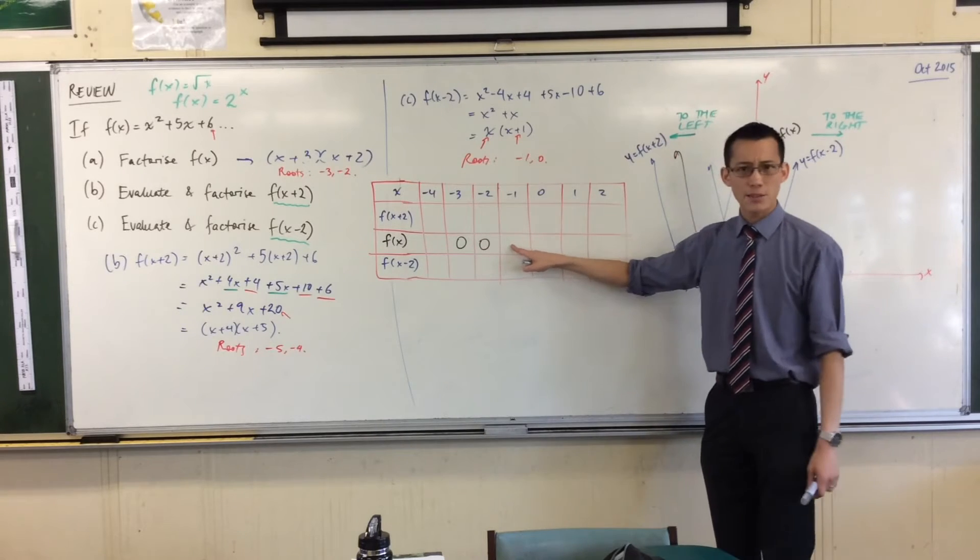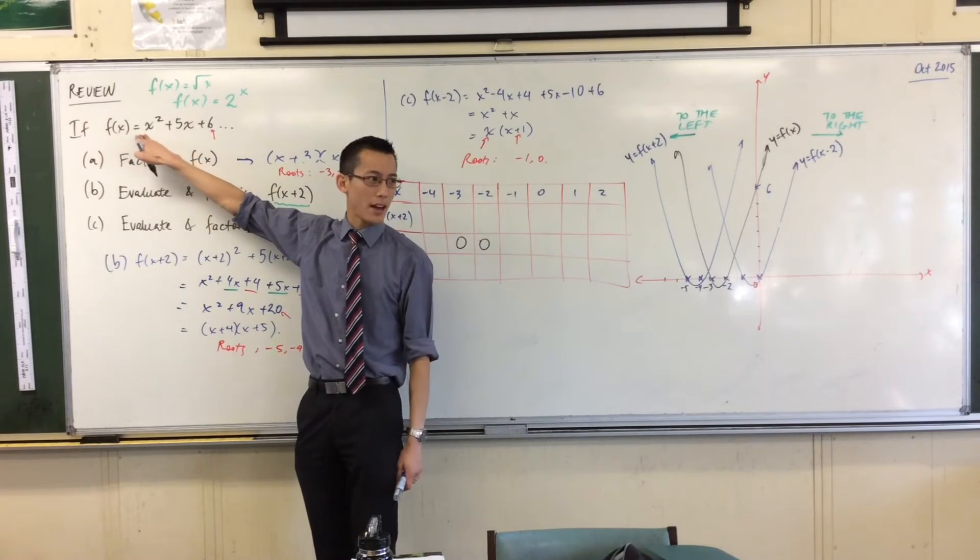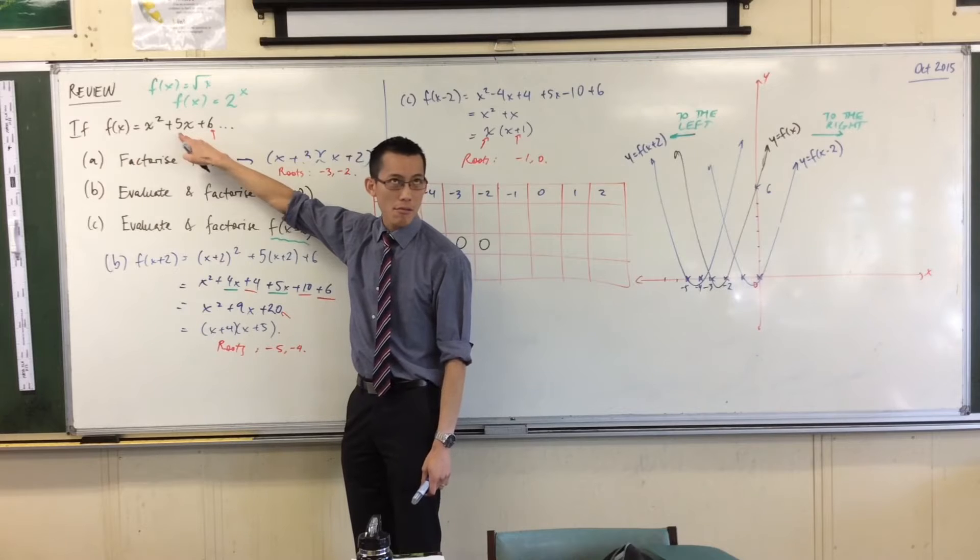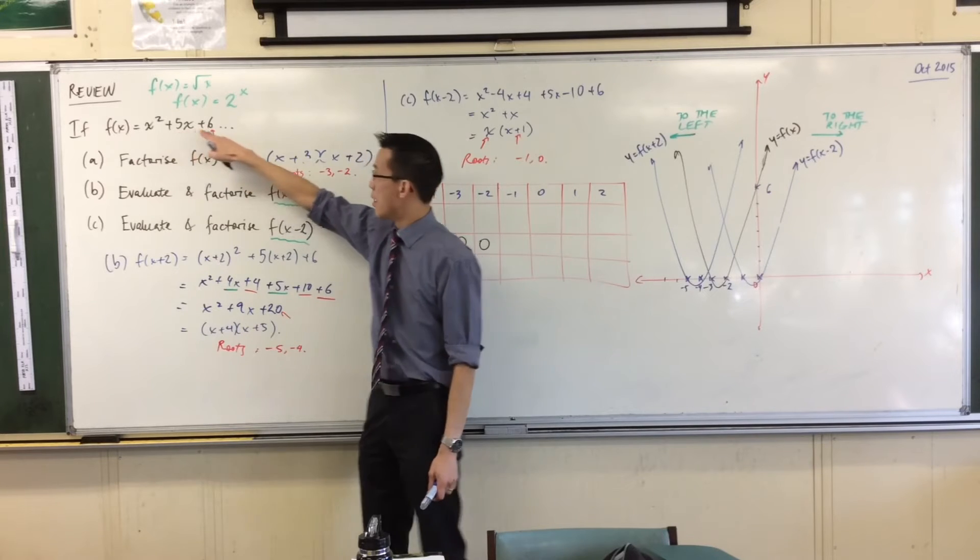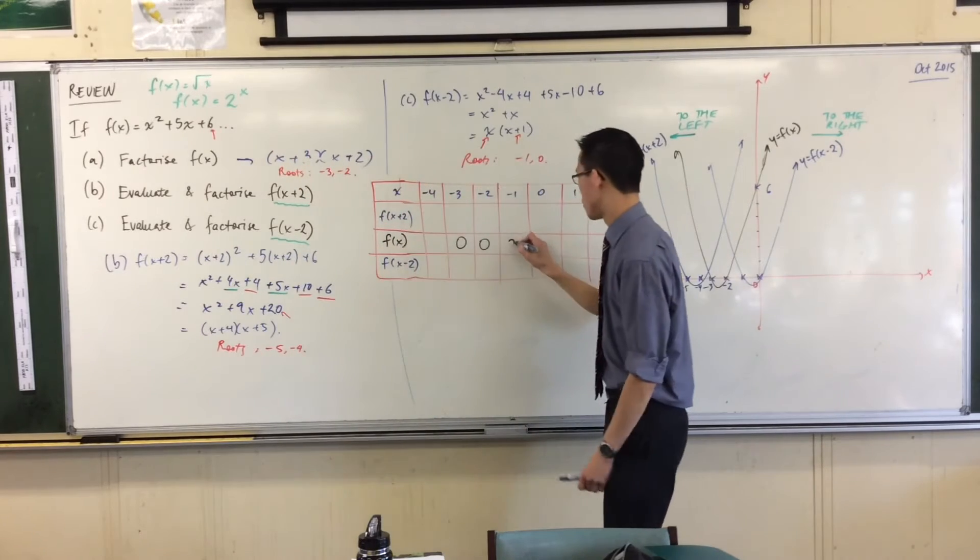Let's do an easy number like negative 1, okay? Negative 1. If I put negative 1 into here, help me out. I'm going to get 1, take away 5, which is negative 4, plus 6. Negative 4 plus 6 is 2, right?